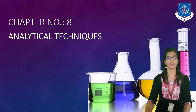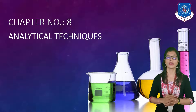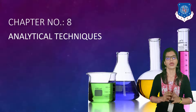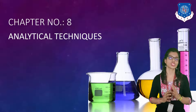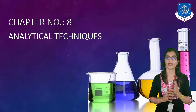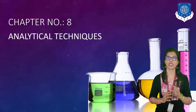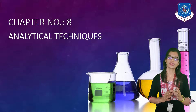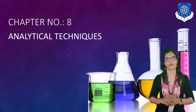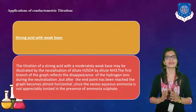In that chapter we have started conductometric titration. Conductometric titration is basically a titration in which we identify the conductance which is passed through the solution, and through that solution we get to know about the identification of a particular compound, the end point, or the neutralization point which occurs during that particular reaction.